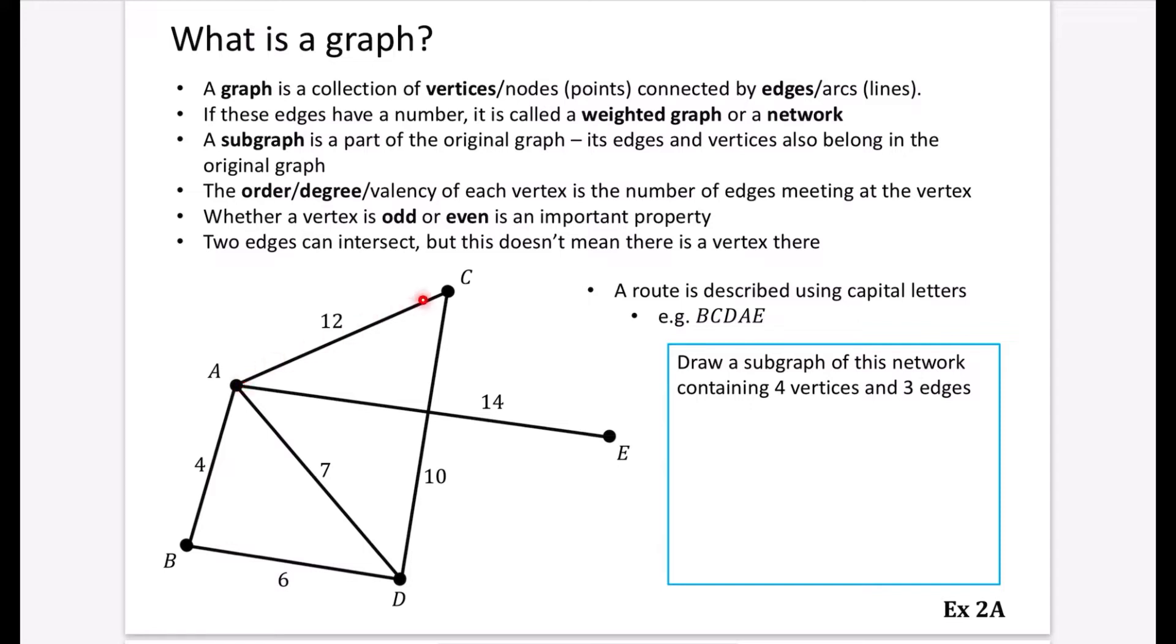So if we imagine that these are different towns A, B, C, D, and E, we can see that the distance between A and C is 12, but that there's no direct road between C and E. So someone from C would have to travel to A and then they would have to travel to E if they wanted to get there.